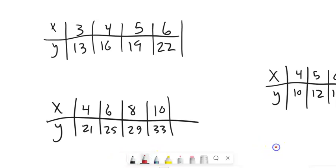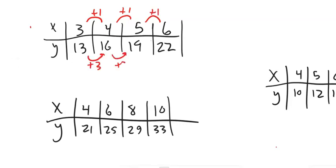So first thing that I'm going to look at is the differences. How is X changing? So on this one, I can see that X is changing by 1. And as X changes by 1, Y changes by 3. So that tells me it's linear. Changing by a constant amount. And as X is changing by 1, Y is changing by 3.